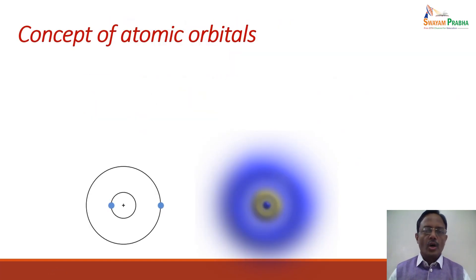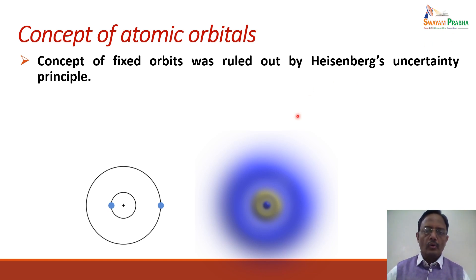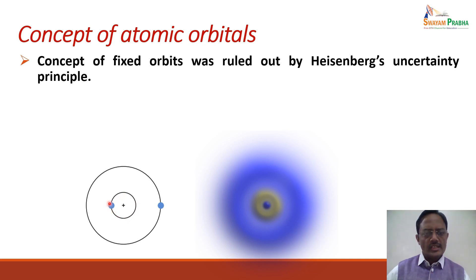What is an atomic orbital? According to Bohr's theory, the electrons are revolving around the nucleus in stationary states or fixed orbits. Every electron is associated with a particular shell — we call them K-shell, L-shell and so on — and electrons are revolving around the nucleus in a particular shell. This is Bohr's concept of orbits.